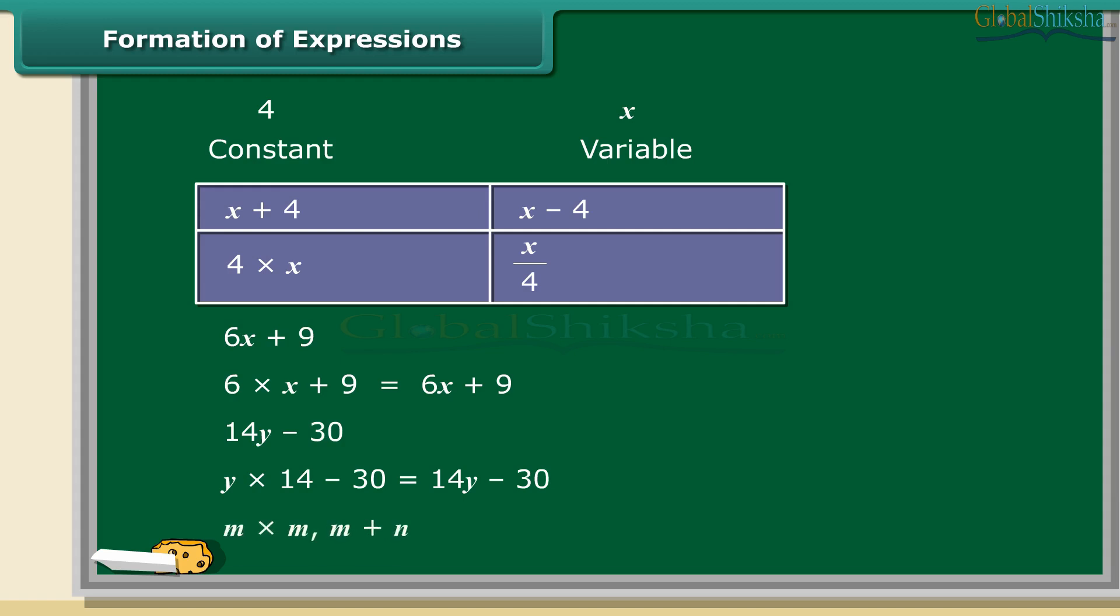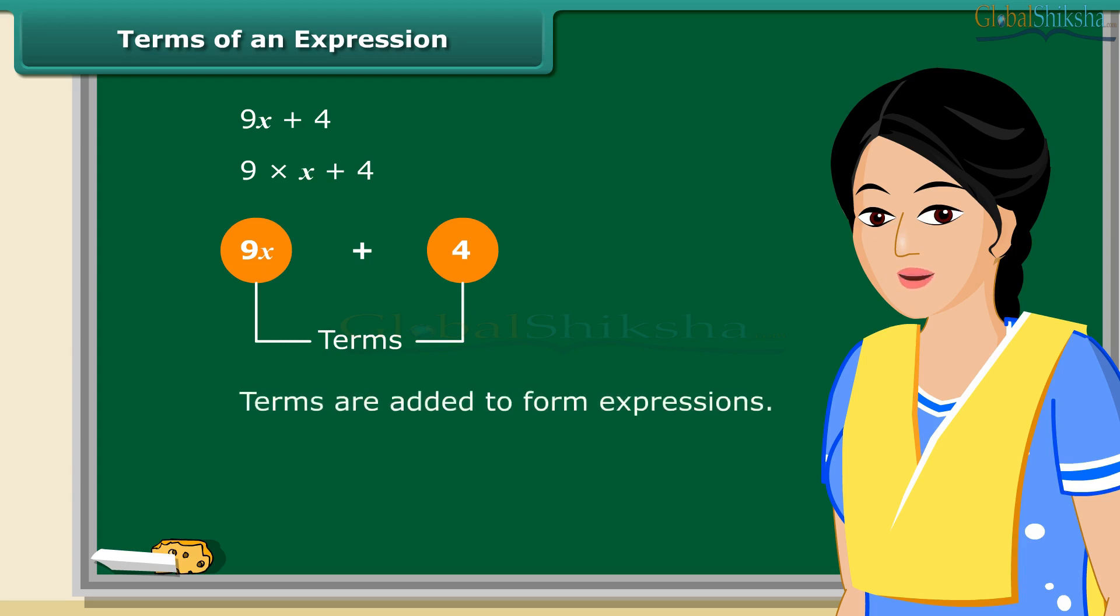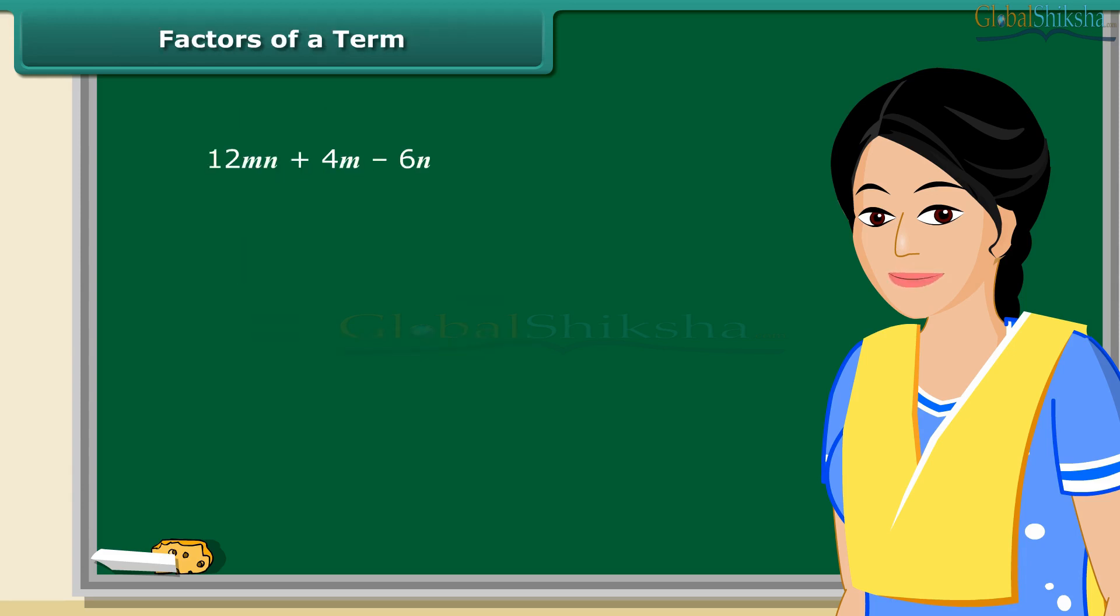Now we will discuss what terms of an expression and their factors are. Consider the expression 9x + 4. In forming this expression, we first formed 9x separately as a product of 9 and x, and then added 4 to it. So you have seen these expressions have parts which are formed separately and then added. We call these parts as terms. That means terms are added to form expressions. How many terms are there in 5x + 3y? That's right, it has two terms.